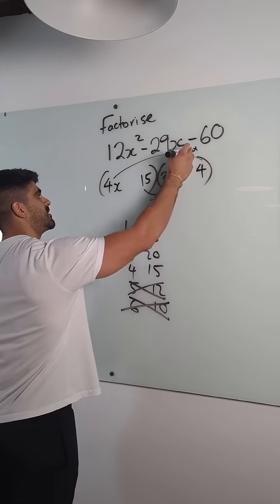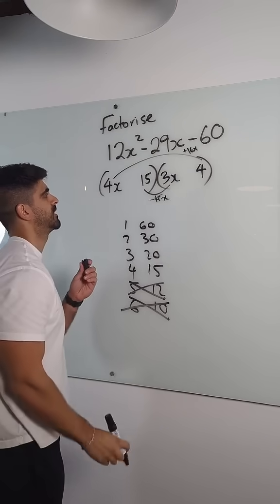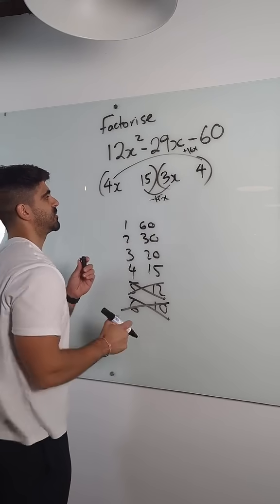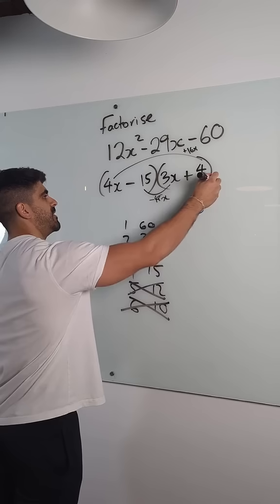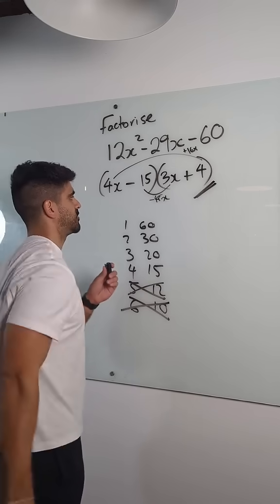Well, that's if this is minus and this is plus. 45 minus 16 gives you 29. So we have minus and plus, and that has been factorized.